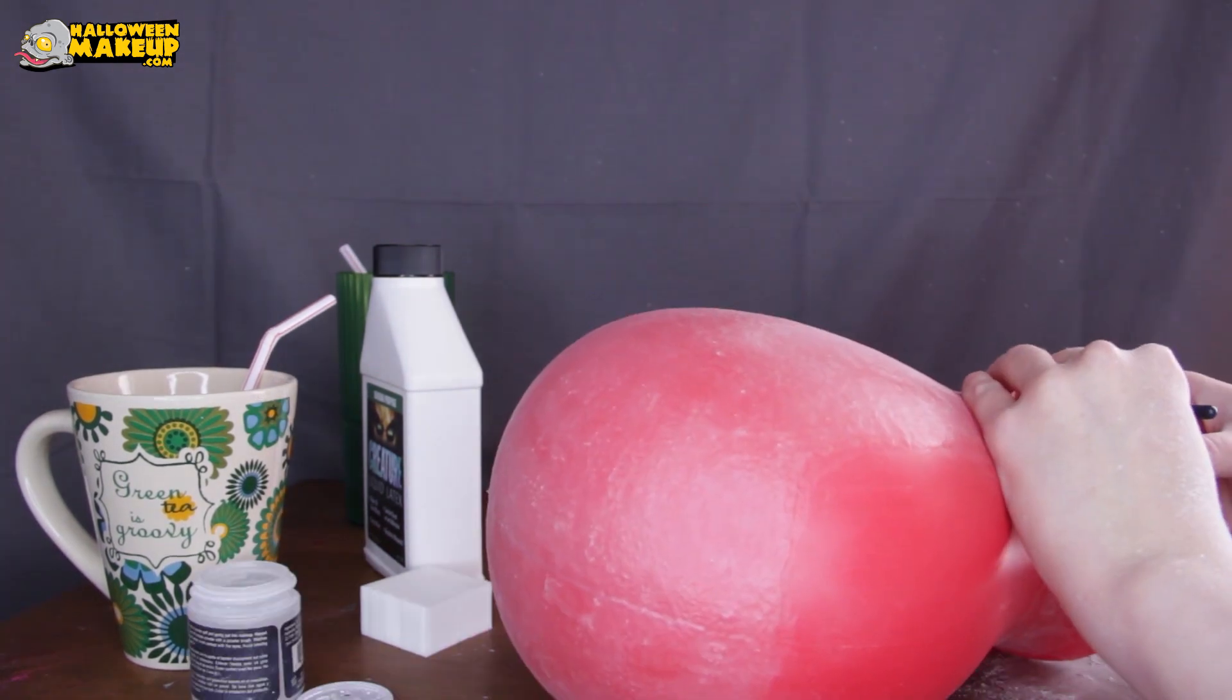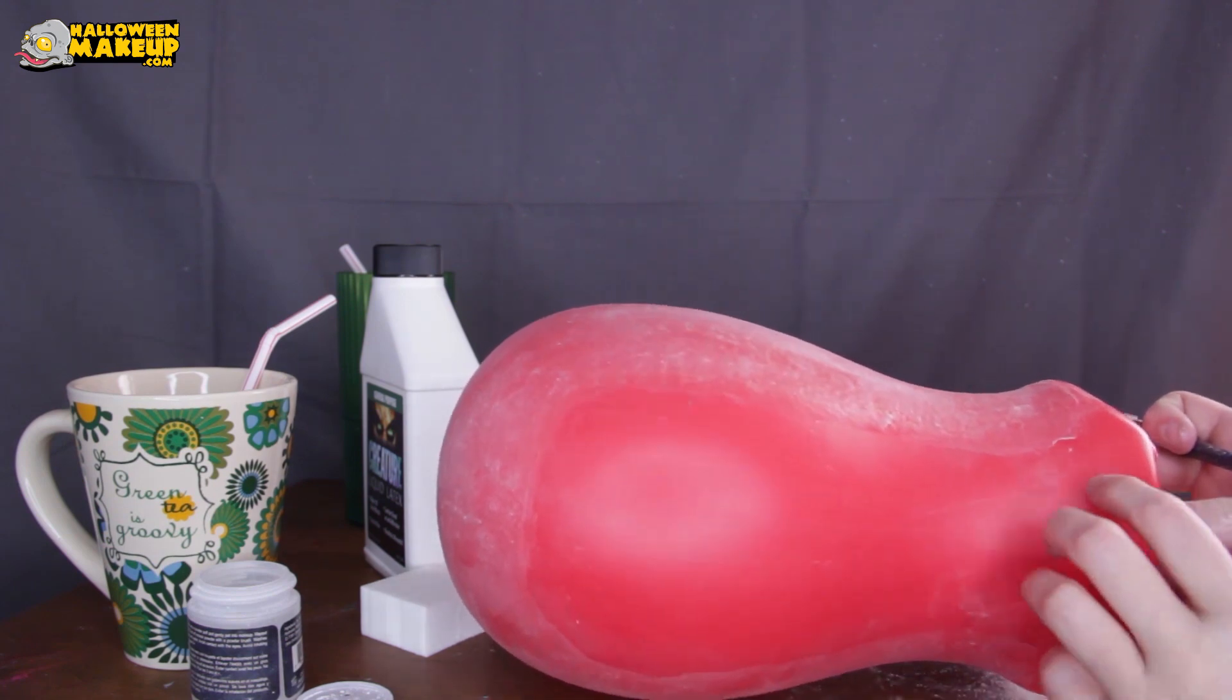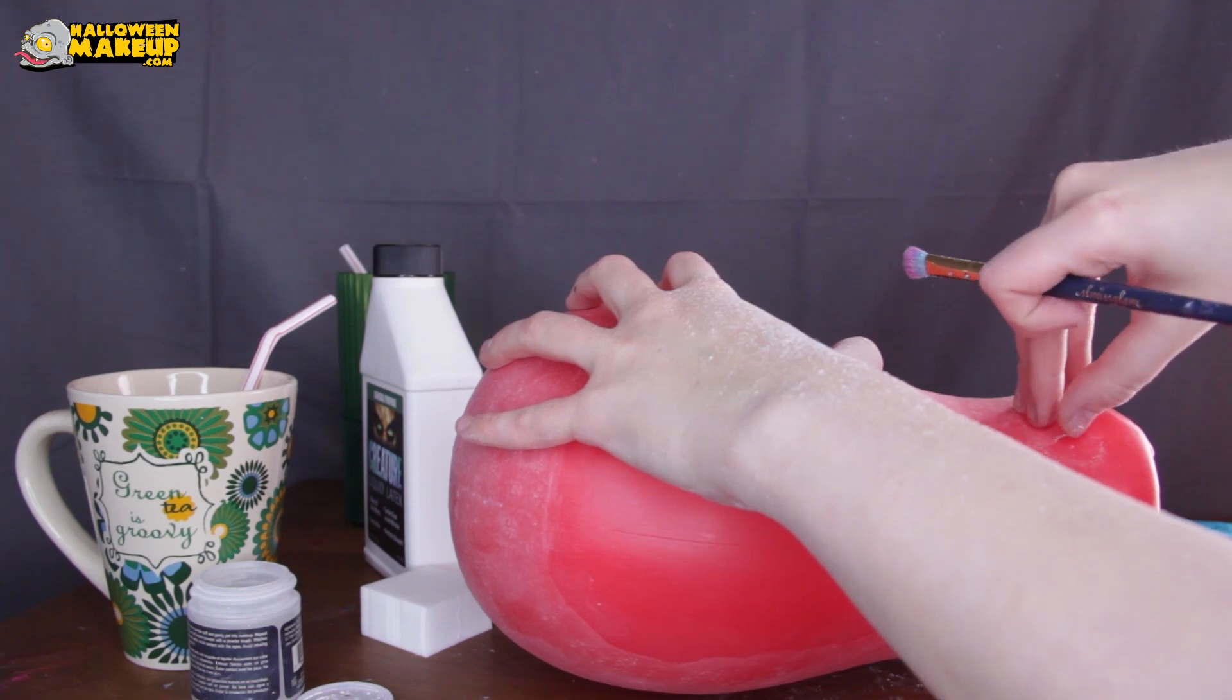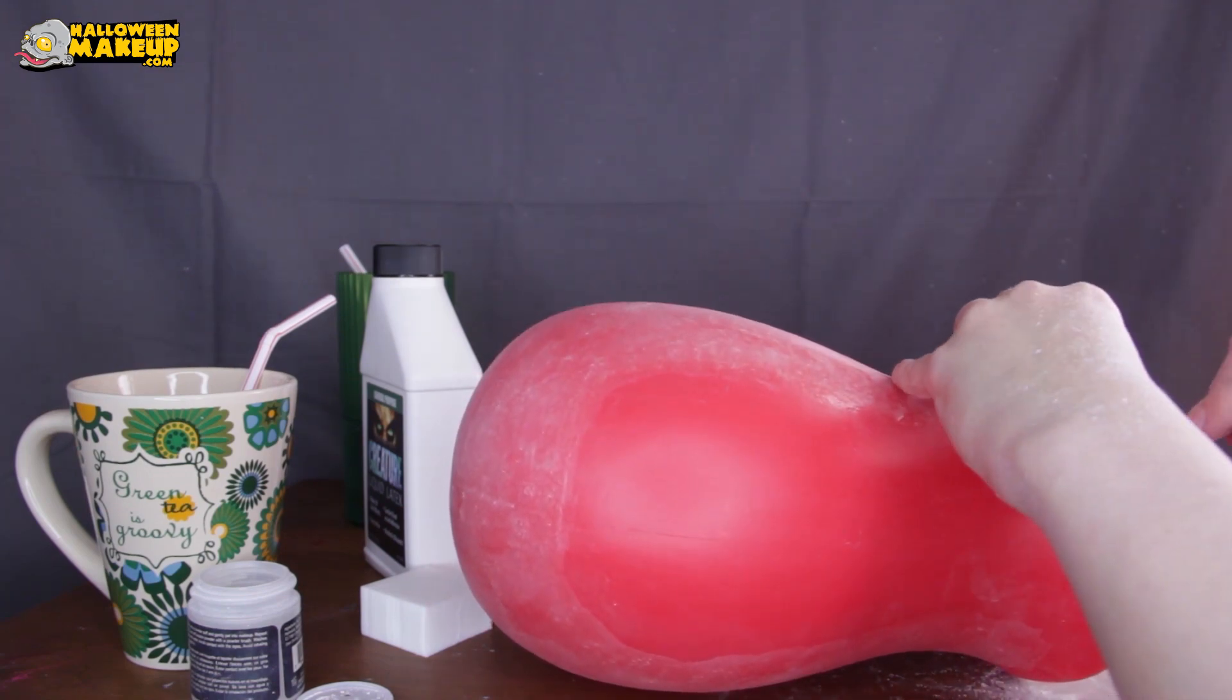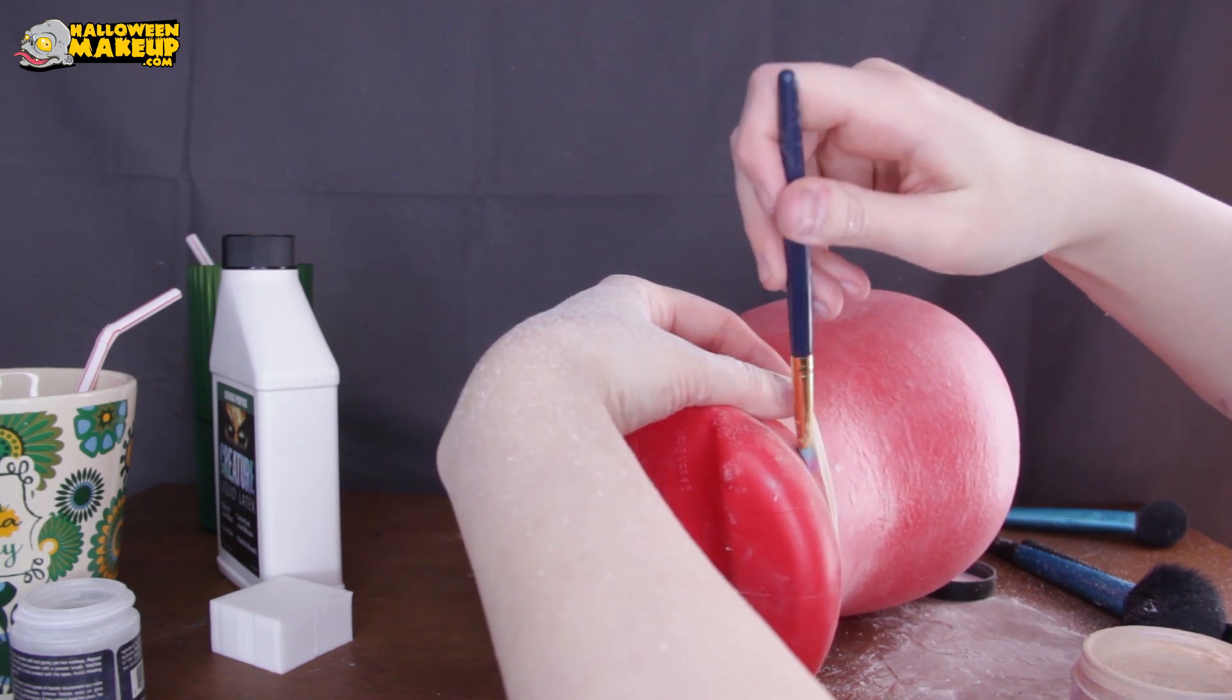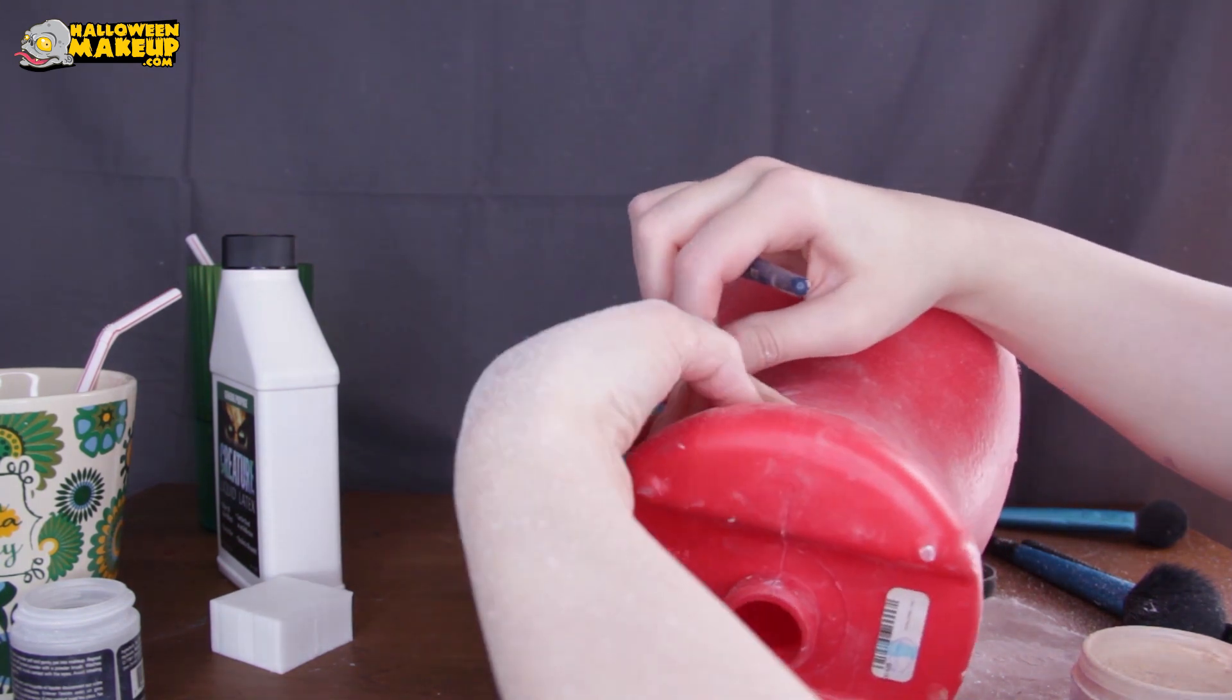After you've completely powdered the outside, now we're going to take that smaller fluffy brush and again some more powder - your whole workspace is just going to be covered - and you're going to very carefully start to peel up one edge and as soon as you've got a part up you're just going to start shoving powder in there.